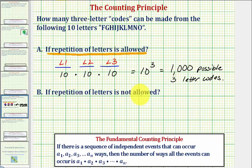So for part B, what if repetition is not allowed? We'll set this up the same way as three independent events, L1 through L3.